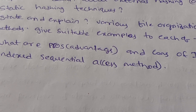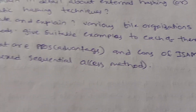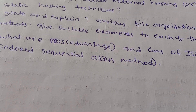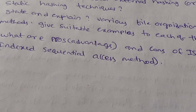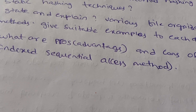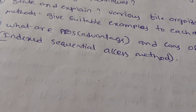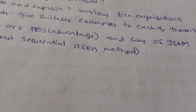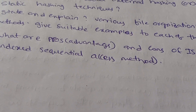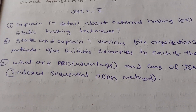Give suitable examples with each of them. File organization methods are available. This is ISAM — the Index Sequential Access Method — including its advantages and disadvantages. This is very important in unit 5.